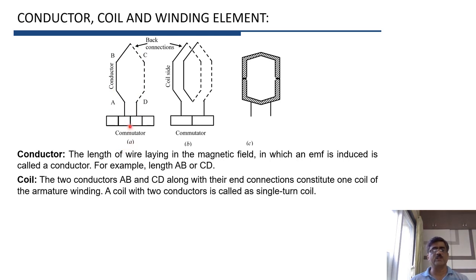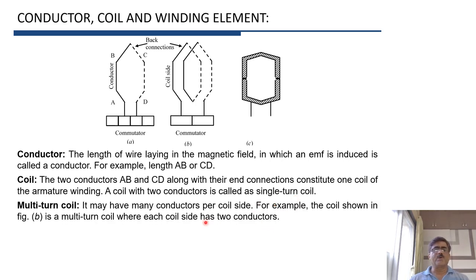In figure A, the coil is shown with one conductor in coil side 1 and one conductor in coil side 2 — such a coil is called a single-turn coil. If the number of conductors per coil side are more than one, then it is called a multi-turn coil. For example, in figure B, there are two conductors in each coil side, so it is called a multi-turn coil.